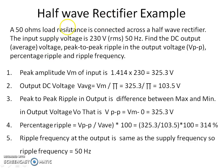Half-wave rectifier example: a 50-ohm load resistance is connected across a half-wave rectifier with an input supply of 230 V at 50 Hz. We need to find the DC output voltage, average voltage, peak-to-peak ripple, percentage ripple, and ripple frequency. The peak amplitude Vm is √2 × 230 = 325.3 V. The output DC average voltage is Vm/π = 103.5 V.